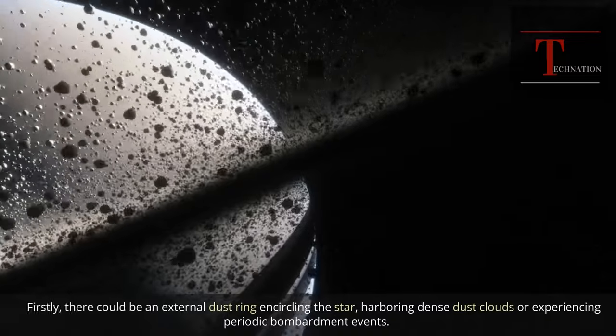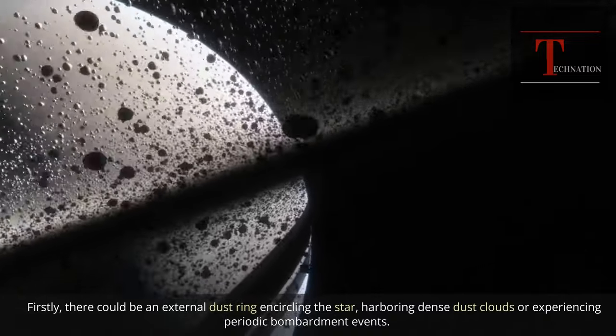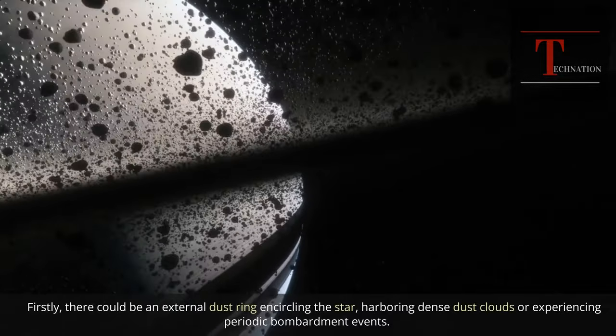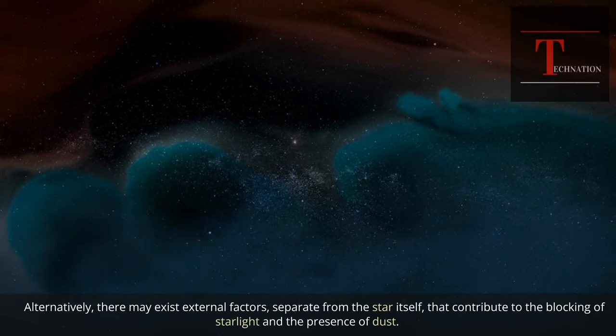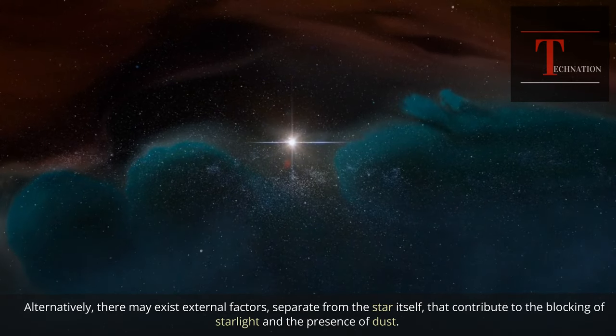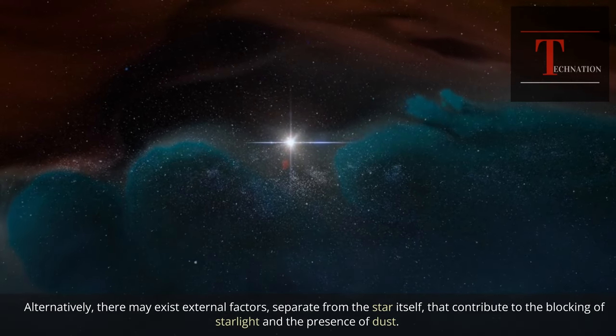Firstly, there could be an external dust ring encircling the star, harboring dense dust clouds or experiencing periodic bombardment events. Alternatively, there may exist external factors, separate from the star itself, that contribute to the blocking of starlight and the presence of dust.